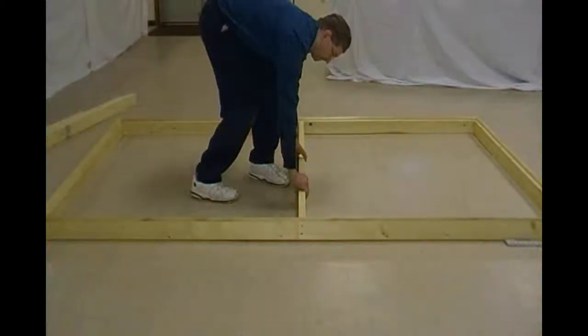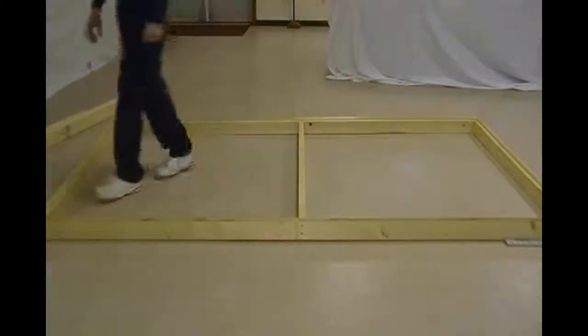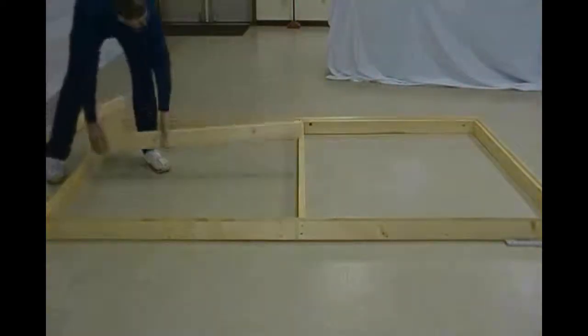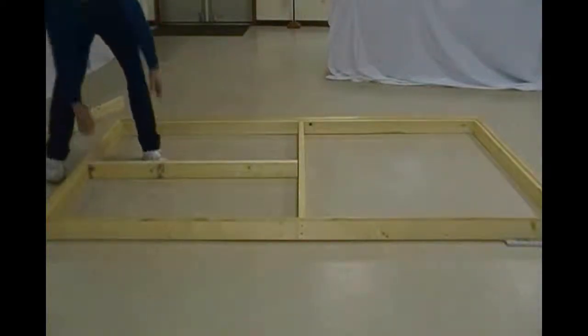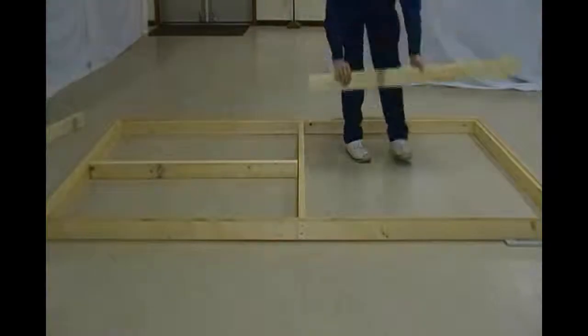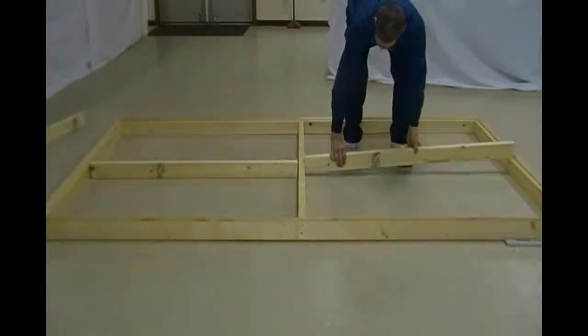The first thing I did was cut the 2 by 4 to size that I need and nail a quarter inch half round trim around the outside of the frame. That will give you space between the canvas and the frame.